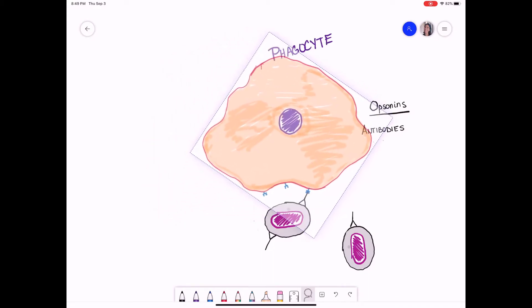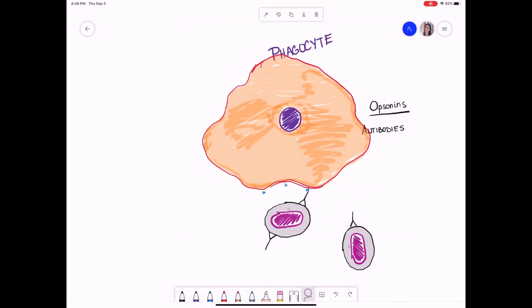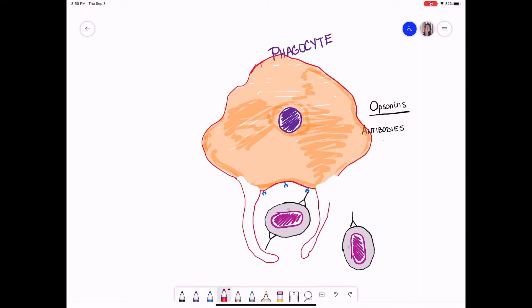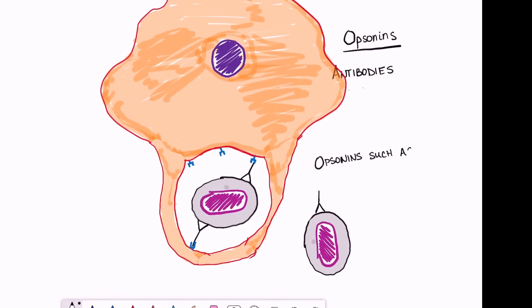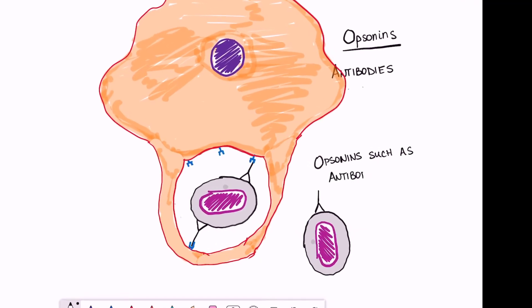And when this happens the phagocyte is able to induce phagocytosis by first extending its cytoplasmic extensions out and enveloping the pathogen. So opsonins are going to be special molecules that are going to help the phagocytes conduct phagocytosis and destroy these encapsulated bacteria.